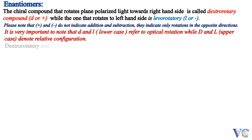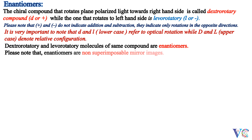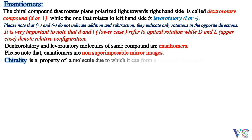Dextrorotatory and levorotatory molecules of the same compound are enantiomers. Please note that enantiomers are non-superimposable mirror images. Chirality is a property of a molecule due to which it can form a non-superimposable mirror image.